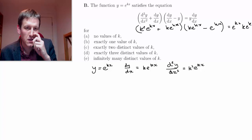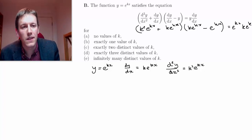So what we see immediately here is that there's e to the kx squared on both sides. There's an e to the kx factor in this bracket and an e to the kx factor in this bracket.